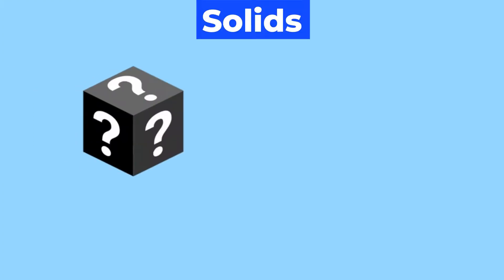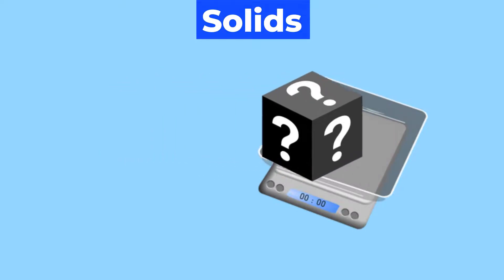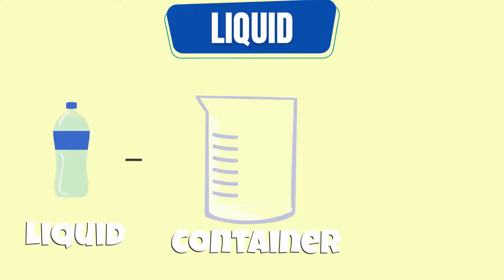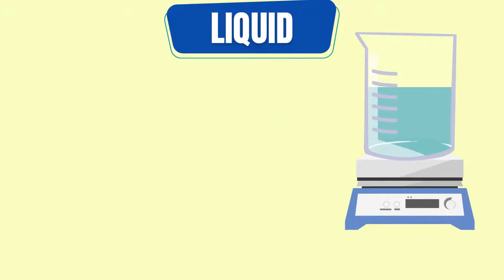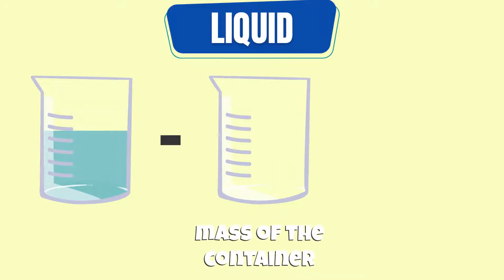If the unknown substance is solid, you can place it on the balance and record its mass in grams. If the substance is a liquid, pour it into a container and measure the total mass of the container on a scale. Then subtract the mass of the container from the total mass of the liquid and the container.